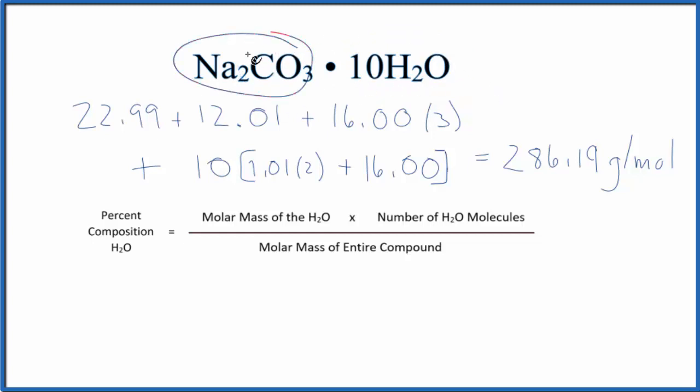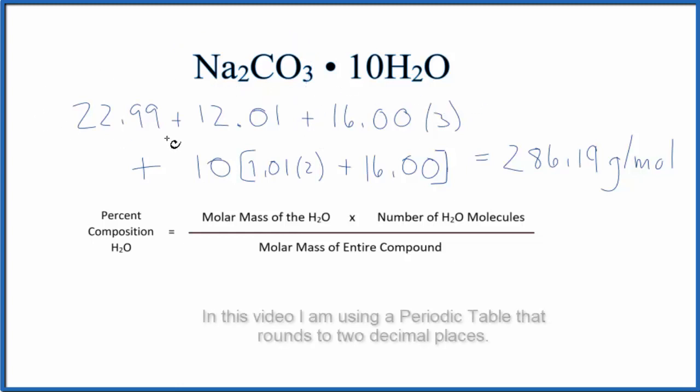To do that, we find the molar mass for the sodium carbonate. That's right here. And then we have 10 times the molar mass of water. So 10 times the molar mass of water. We add all that together. This is the molar mass for the entire compound.